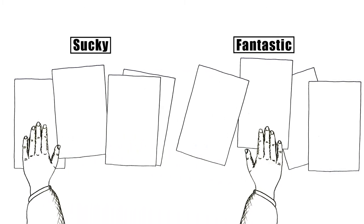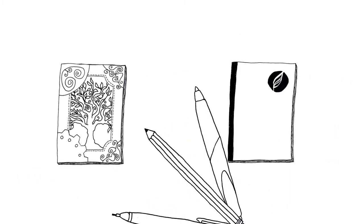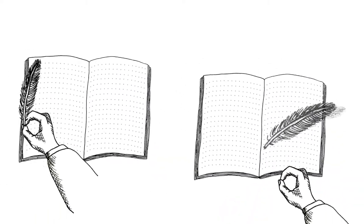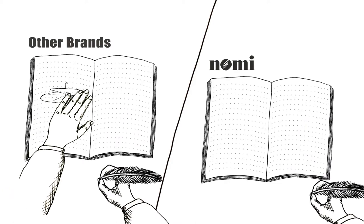Not all paper is made equally. We think about paper quality in terms of how well it performs with a wide array of writing instruments. Does an inky pen bleed or show through the paper, rendering the reverse side unusable?